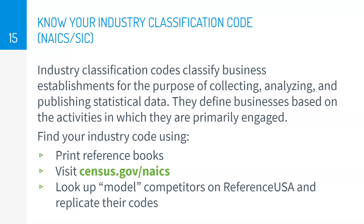Industry classification codes, brought to you by the US Census Bureau, are the government's way of classifying every industry for research and statistical reasons. The codes define businesses based on the activities in which they are primarily engaged. You can find your code by browsing census.gov/NAICS to keyword search, by searching similar businesses and replicating their codes, or by using Google — but always check the results against census.gov/NAICS since sometimes it's an outdated or incorrect number.